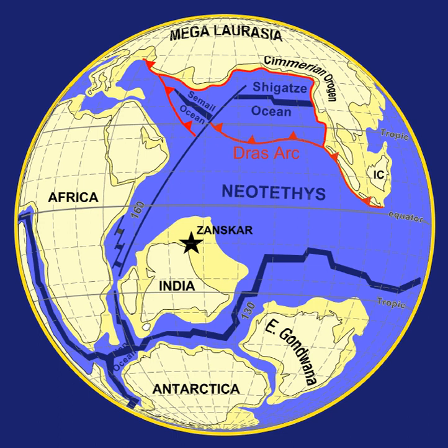The Ordovician period started at a major extinction event called the Cambrian-Ordovician extinction event, about 485.4±1.9 Ma. During the Ordovician, the southern continents were collected into a single continent called Gondwana. Gondwana started the period in the equatorial latitudes and, as the period progressed, drifted toward the South Pole. Early in the Ordovician, the continents Laurentia, Siberia and Baltica were still independent continents, but Baltica began to move toward Laurentia later in the period, causing the Iapetus Ocean to shrink between them.